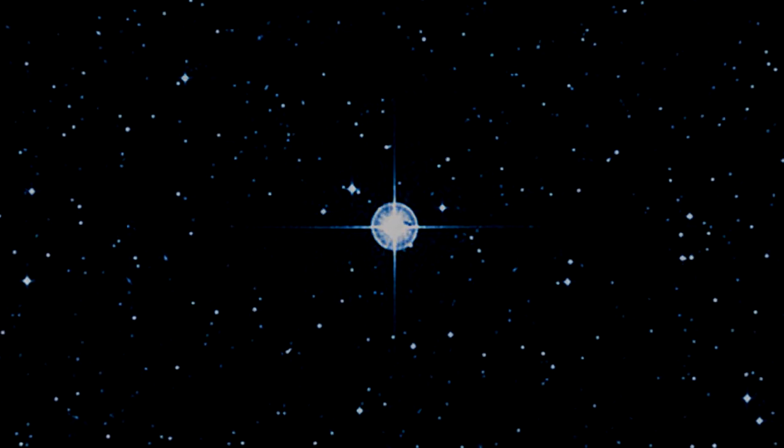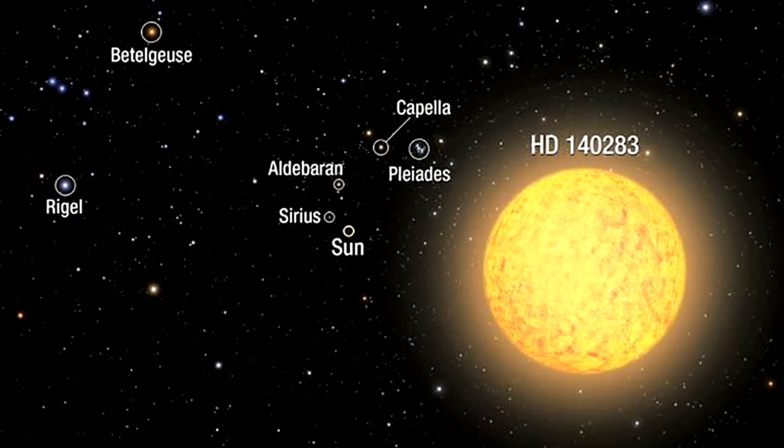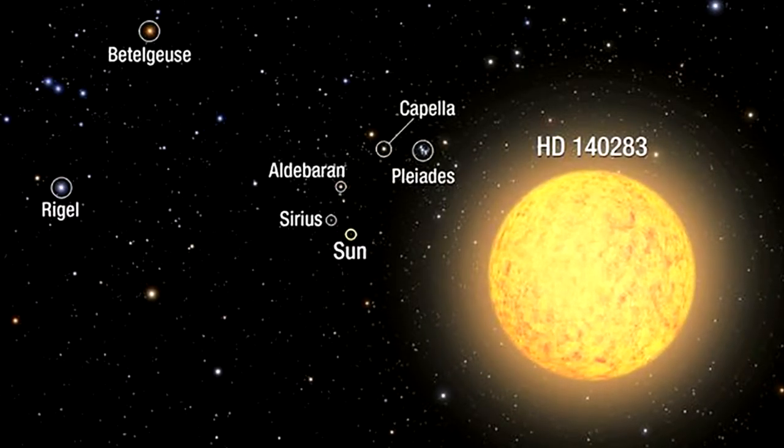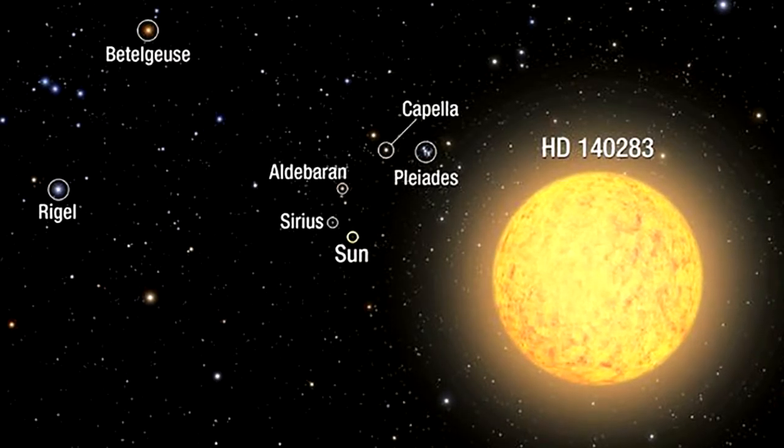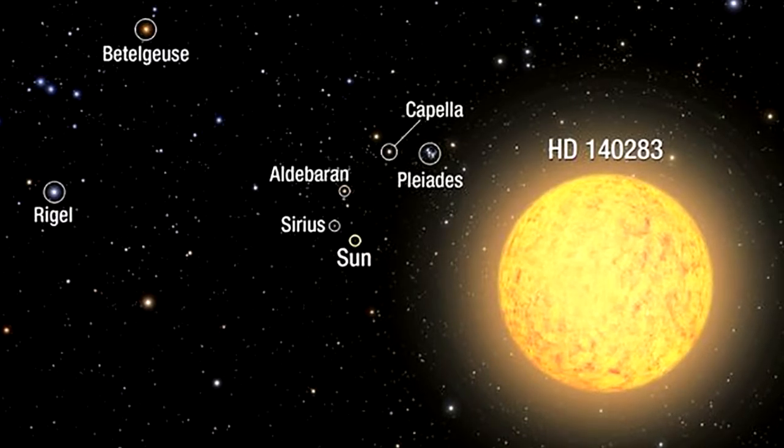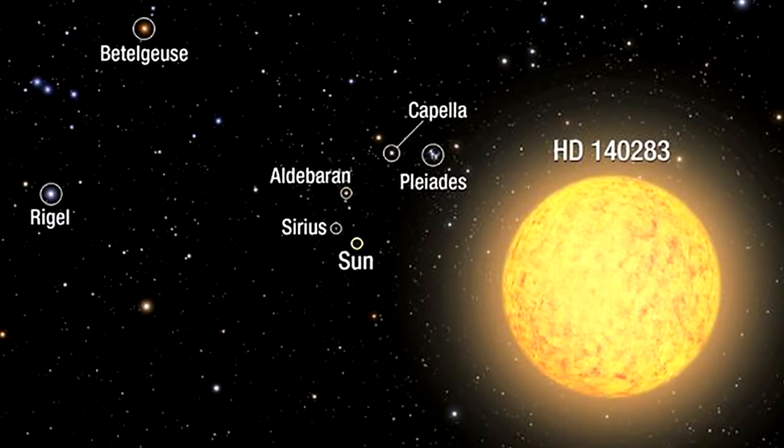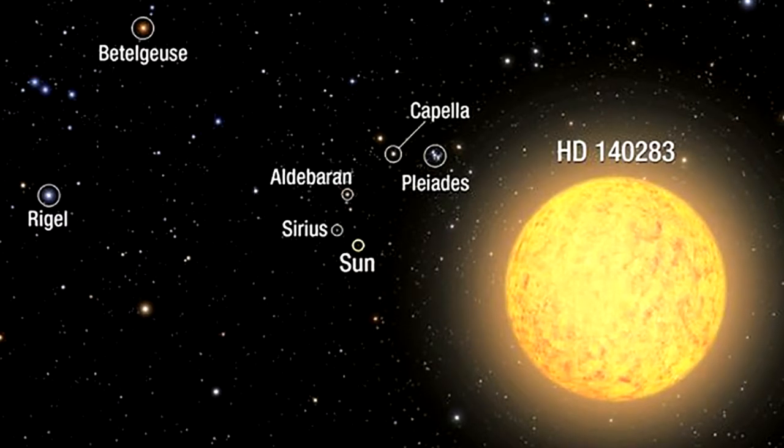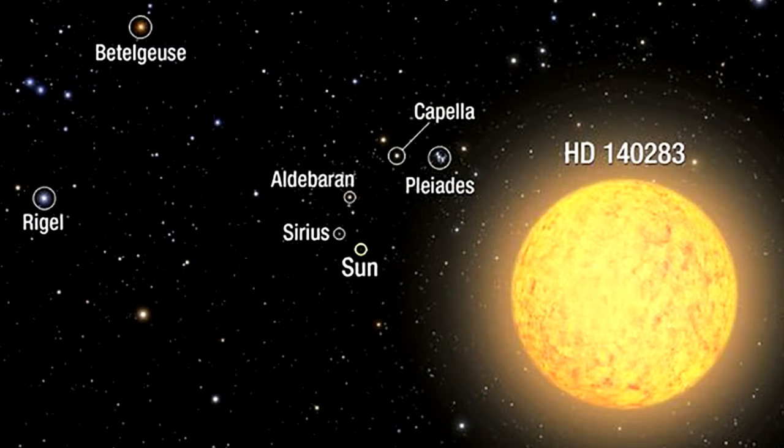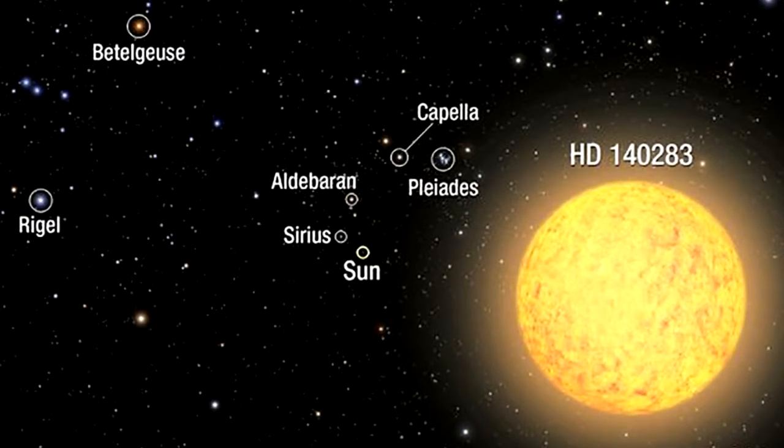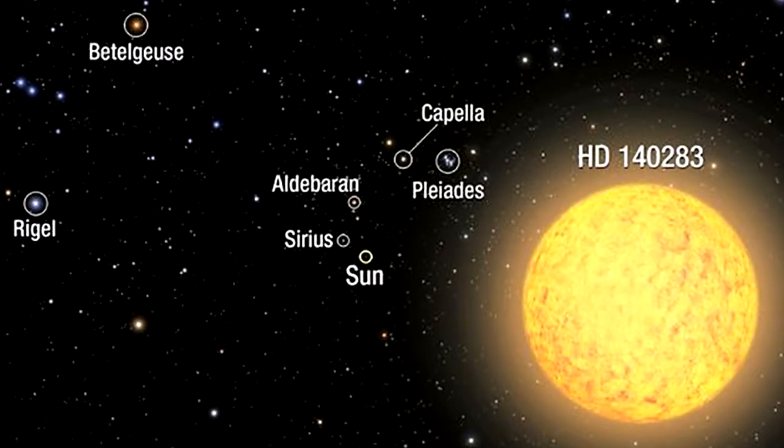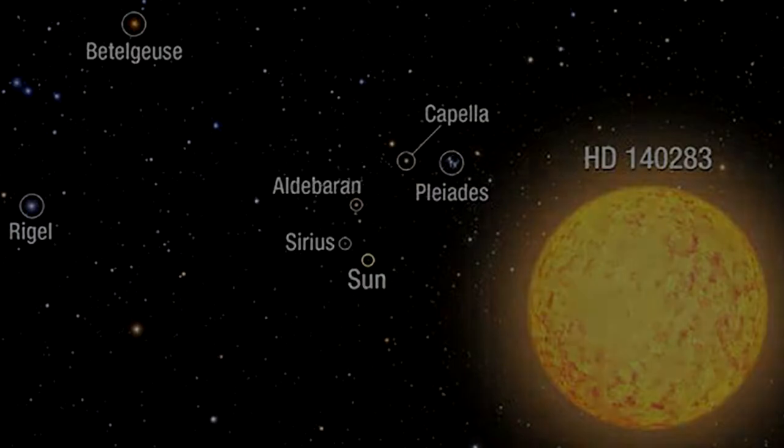There are other objects whose age we can't measure but can infer. Some of them appear to be even older than E1523-0901. HD 140,283, nicknamed the Methuselah Star, is a star that has long caused trouble. Initial estimates of its age gave figures that would make it older than the universe. More accurate measurements made possible by Hubble brought the figure down from 16 billion years to around 14.5 billion, with error bars that bring it inside the age of everything else.